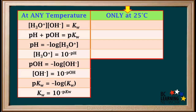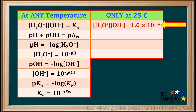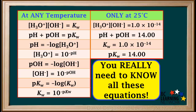Now we'll review what's true only at 25 degrees: concentration of hydronium times concentration of hydroxide equals 1 times 10 to the negative 14th; pH plus pOH equals 14; Kw is 1 times 10 to the negative 14th; and pKw equals 14. Any equations that contain the number 14 are only true at 25 degrees. In order to succeed in the rest of this unit, you really need to know all of these equations. Pause and make a screen capture of this, save it, and go over it periodically.